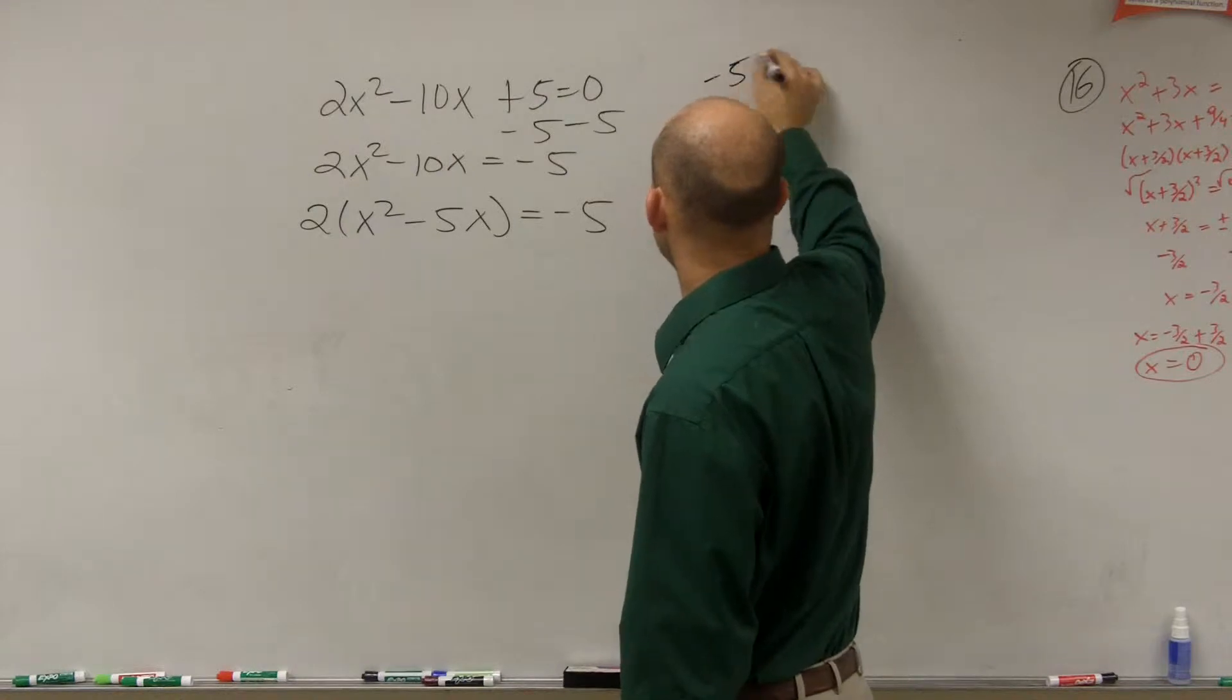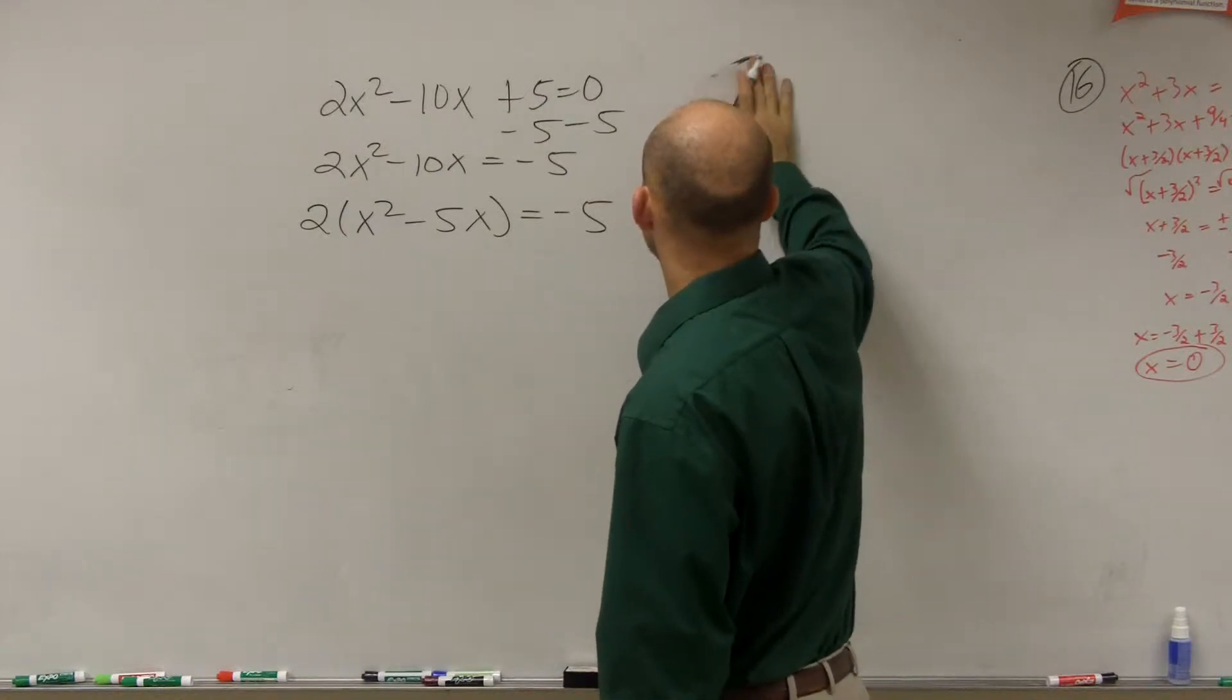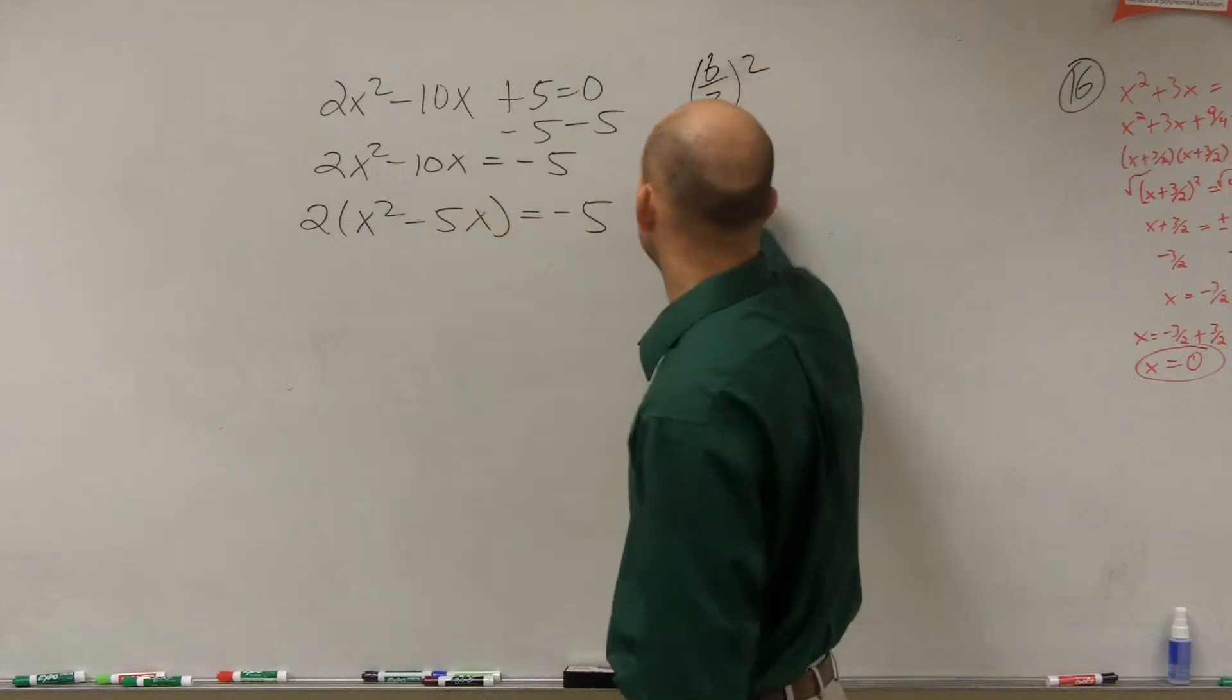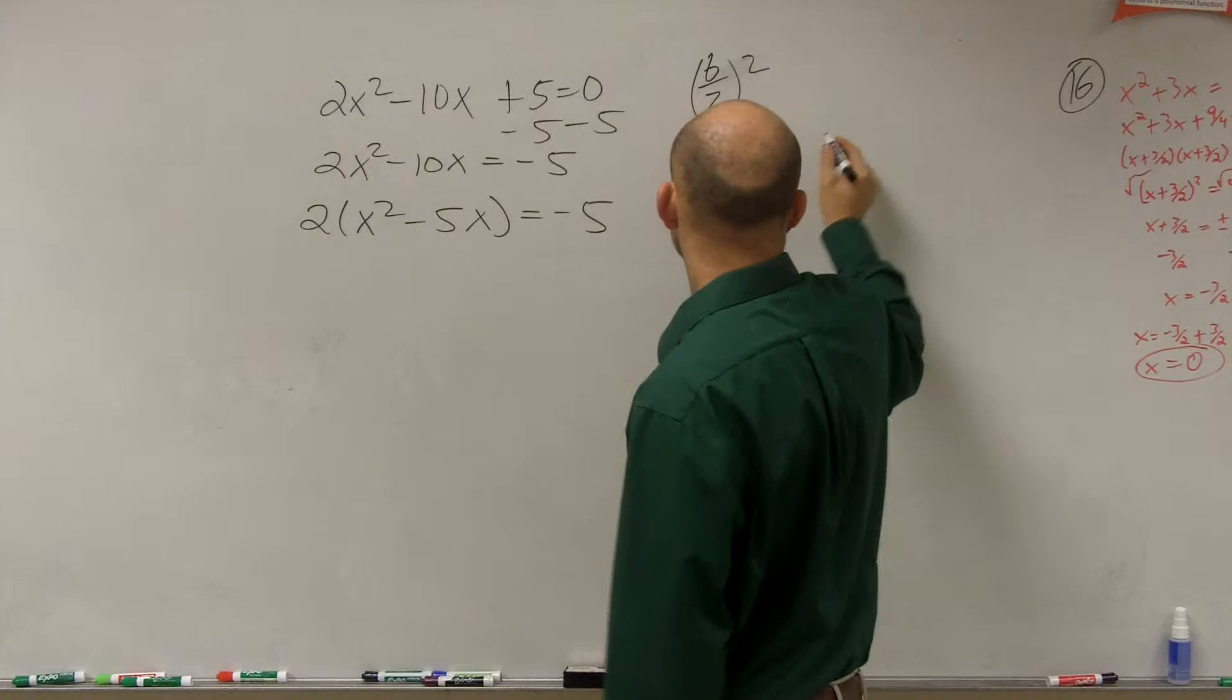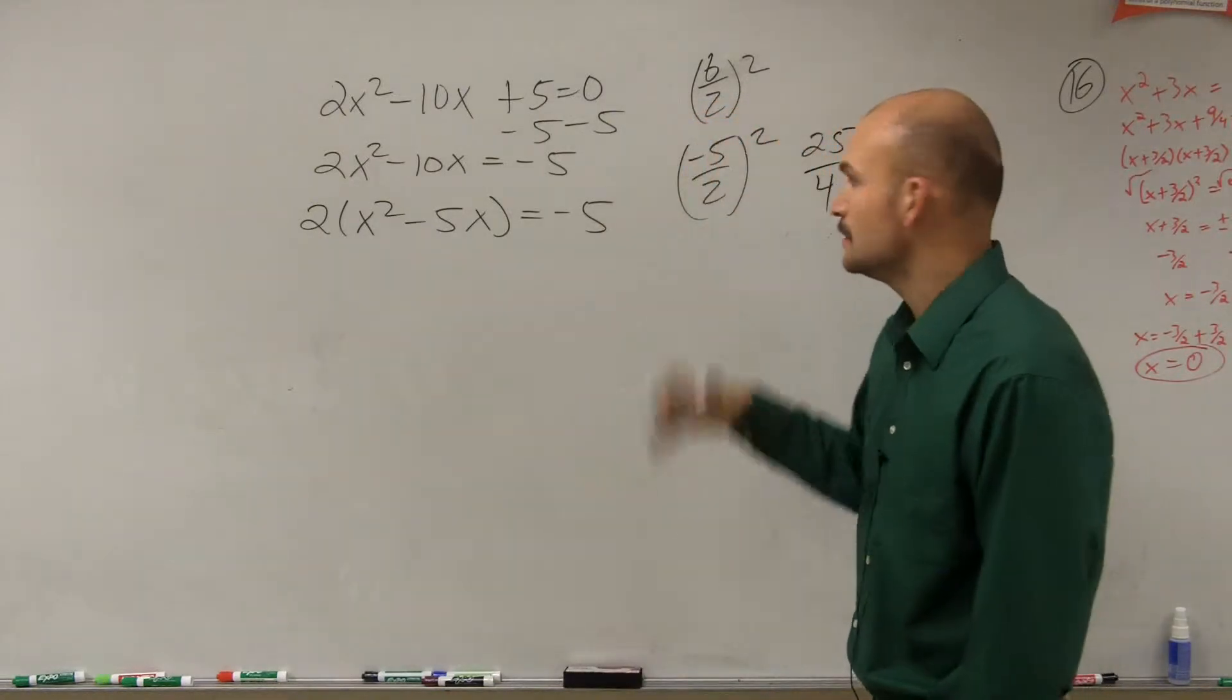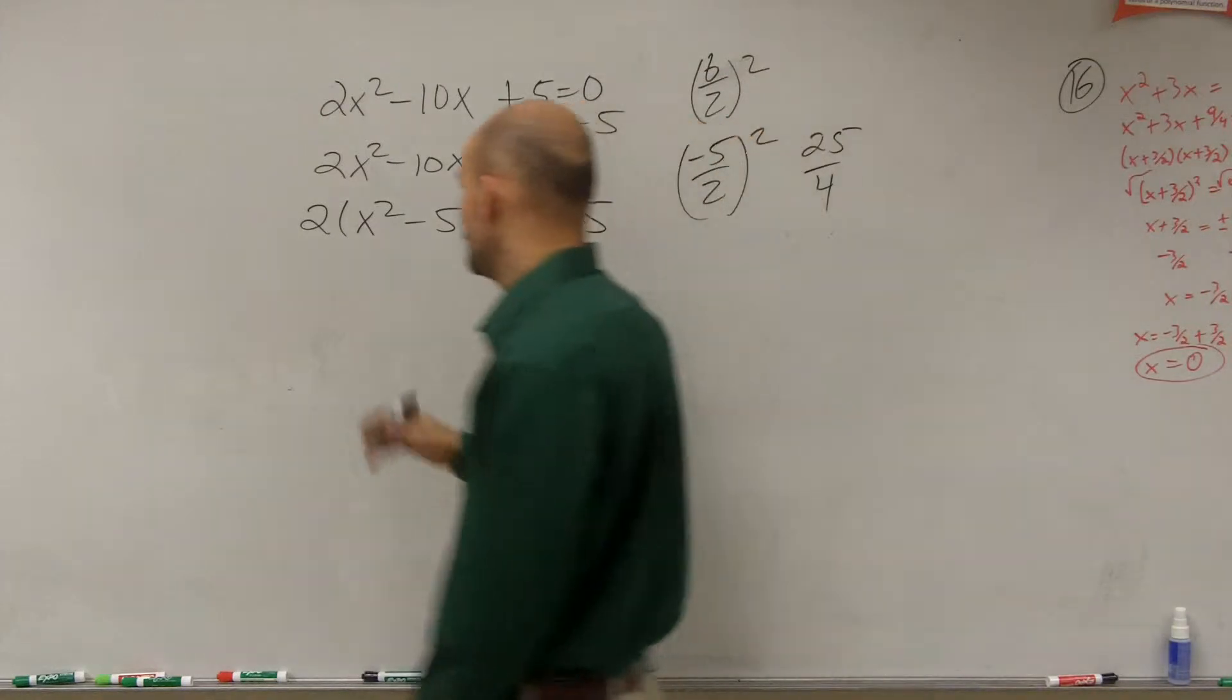I take my b, which is negative 5. b divided by 2 squared. My b is negative 5. Negative 5 divided by 2 squared gives me 25 over 4. So we add 25 over 4 inside the parentheses.